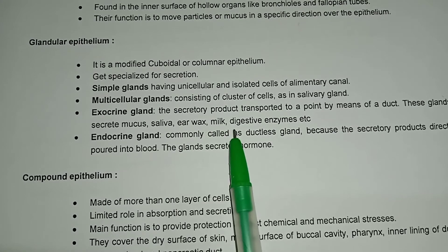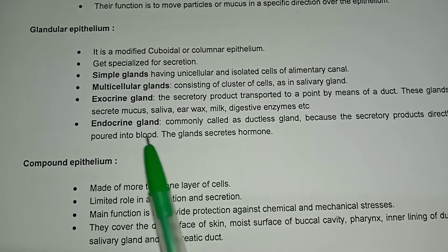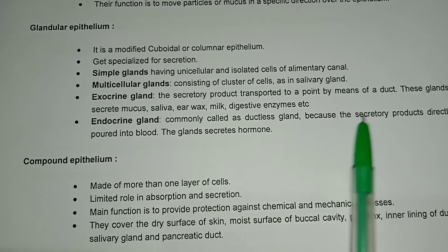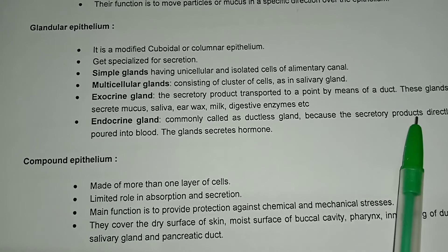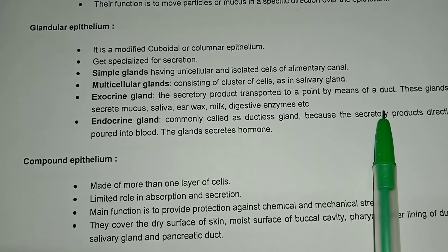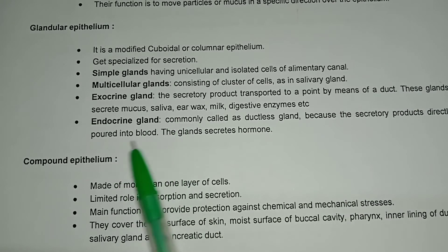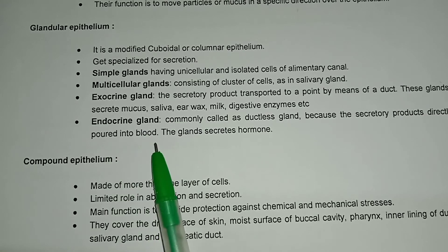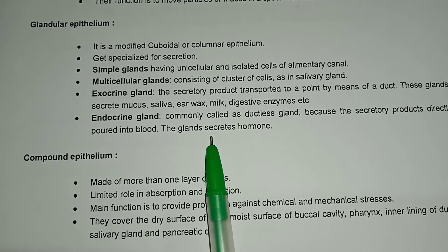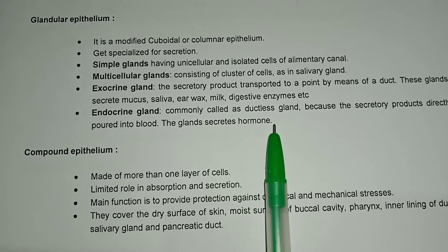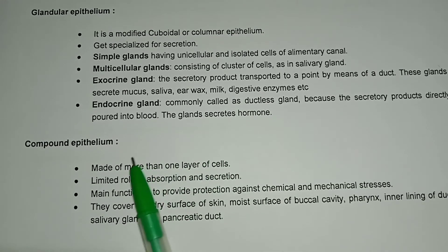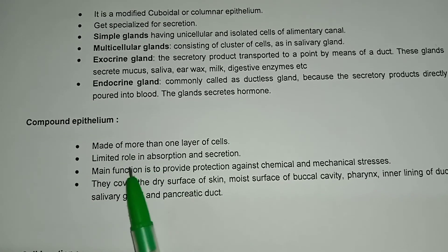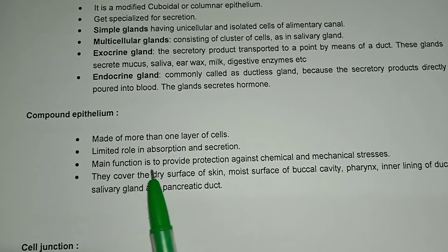Exocrine glands have ducts and excrete mucus, saliva, earwax, milk, and digestive enzymes. Endocrine glands are called ductless glands because their secretory product goes directly into the blood. These glands secrete hormones.